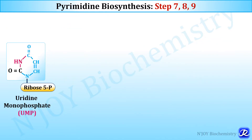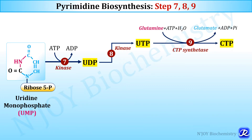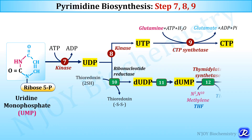In step 7, UDP is formed from UMP in an ATP-dependent reaction catalyzed by kinase. UDP serves as a precursor for UTP (step 8) and CTP (step 9); CTP is formed from UTP by CTP synthetase with glutamine donating the amino group. From UDP, deoxy UDP is formed by ribonucleotide reductase in a thioredoxin-dependent reaction, then deoxy UMP, and finally deoxy TMP (dTMP) is formed from deoxy UMP by thymidylate synthetase using N5,N10-methylene tetrahydrofolate as the methyl group donor.